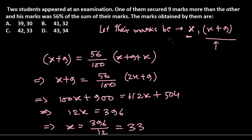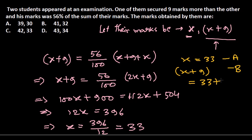So x equals 33 — that is the mark of the first student. The marks of the second student will be x plus 9, which is 33 plus 9 equals 42. So the marks of both students are 33 and 42. The correct answer is option C.